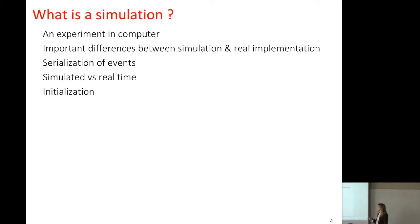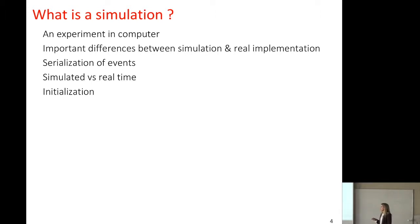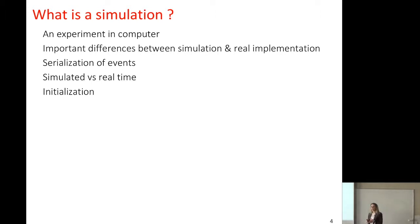Another important issue for simulation is initialization. The state and output of a simulation may be affected by the initial conditions, and it is very hard to know which initial state is the correct one to start with. Therefore, the solution is stationarity: we should measure the output of our simulation when it is in a stationary regime, not in the transient regime. We will see this in more detail later.